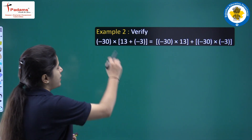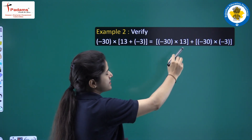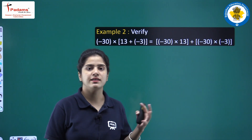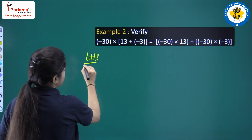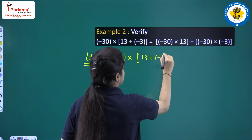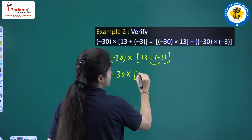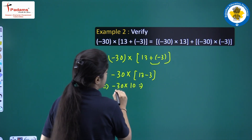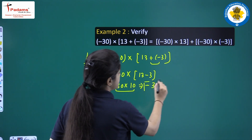Let us discuss the second question now: verify that minus 30 into (13 plus minus 3) equals minus 30 into 13 plus minus 30 into minus 3. We have done verification in exercise number 1.1, and similarly we will do this example. First, taking the left-hand side: minus 30 into (13 plus minus 3). Plus times minus is minus, so 13 plus minus 3 equals 10. Minus 30 into 10 equals minus 300. So the left-hand side is minus 300.